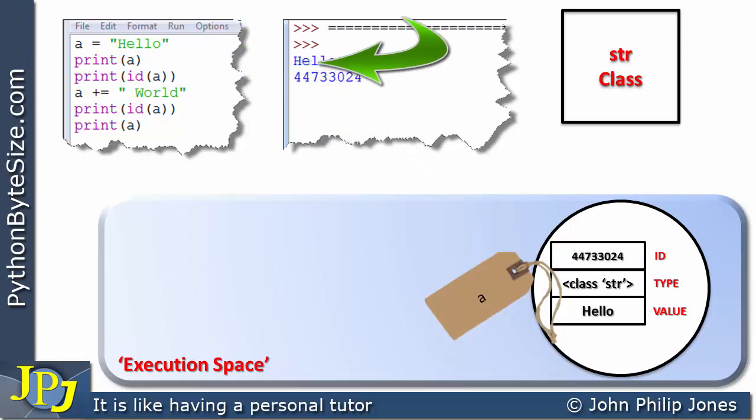If we have a look at this particular program statement, we can see we have an augmented operator. We introduced these earlier in the playlist. Here we've got a variable identifier and over here you can see we've got a literal string that contains the word world. You can see in front of the W we have a space, because this program statement is going to join world to the variable A and form hello world.